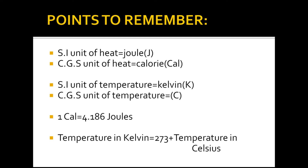The temperature in Kelvin is equal to the temperature in Celsius plus 273. To convert from Kelvin to degree centigrade, in reverse, 273 is subtracted.